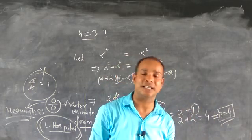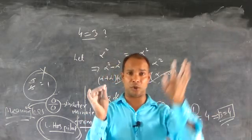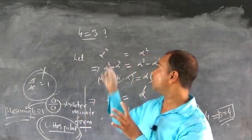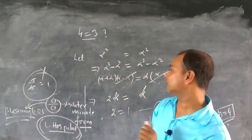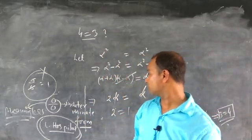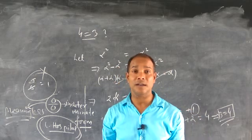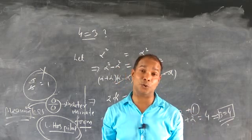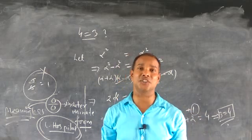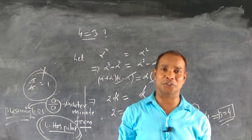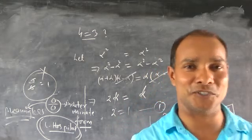Come on, friends. You got the point — what I wanted to tell you. We showed you how 4 equals 3 was apparently proved, and where the wrong thing happened. It happened because 0 divided by 0 was treated as 1, which is an indeterminate form. Thank you very much for watching this video. If you like it, then like it, comment, and share it. Thank you very much.